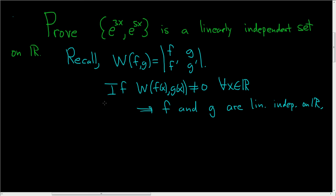So if you can show that the Wronskian is not equal to zero for all x, then the functions themselves are independent.